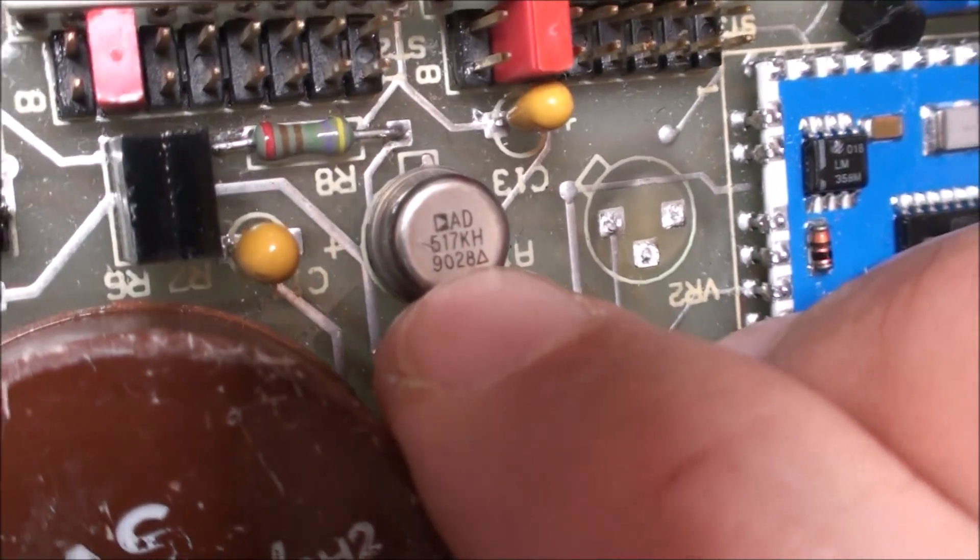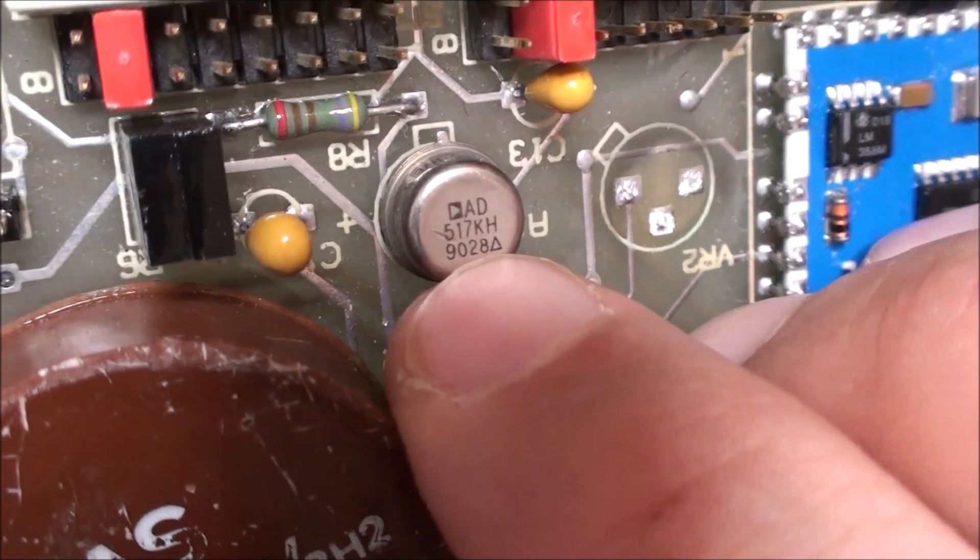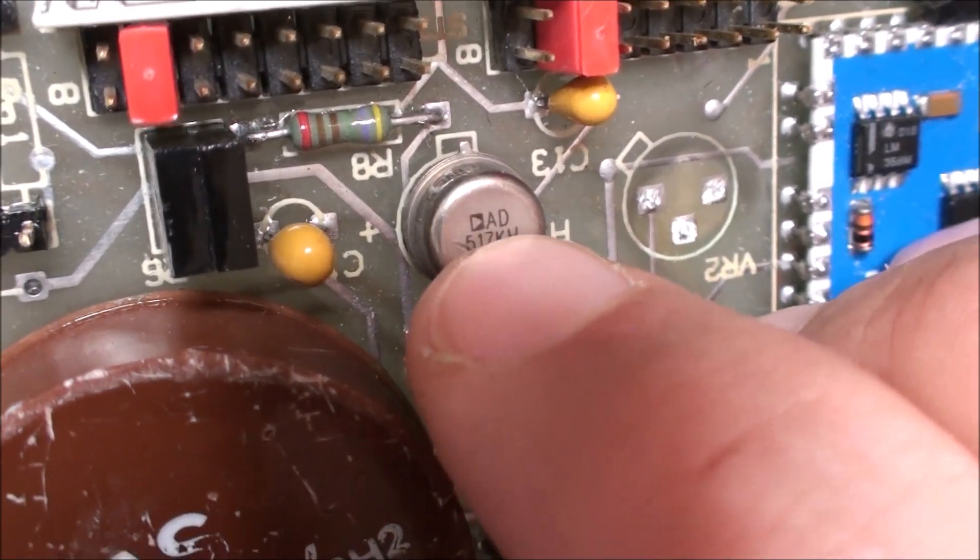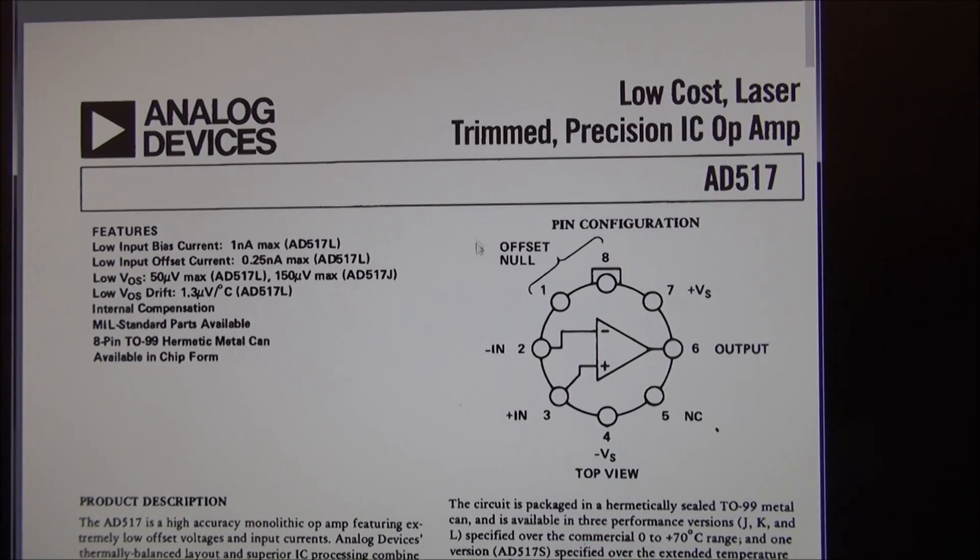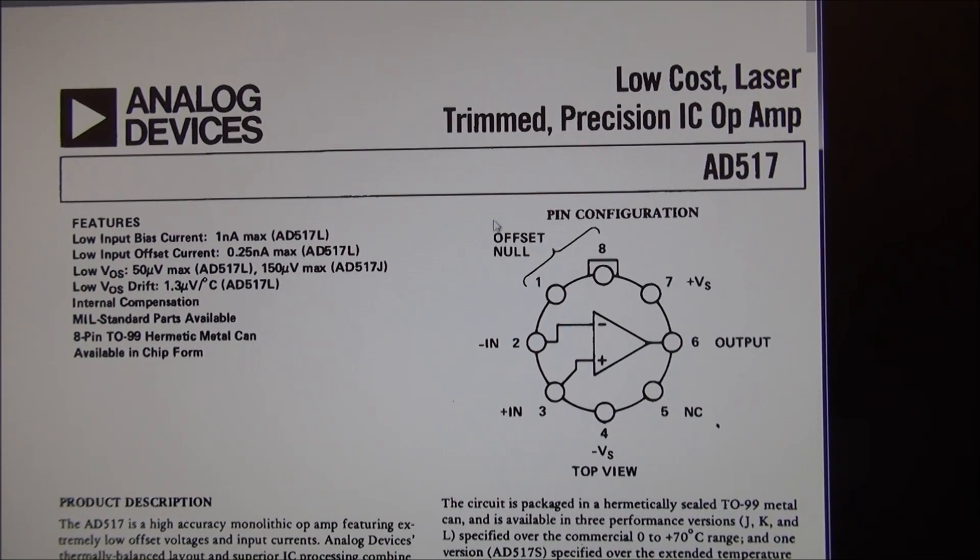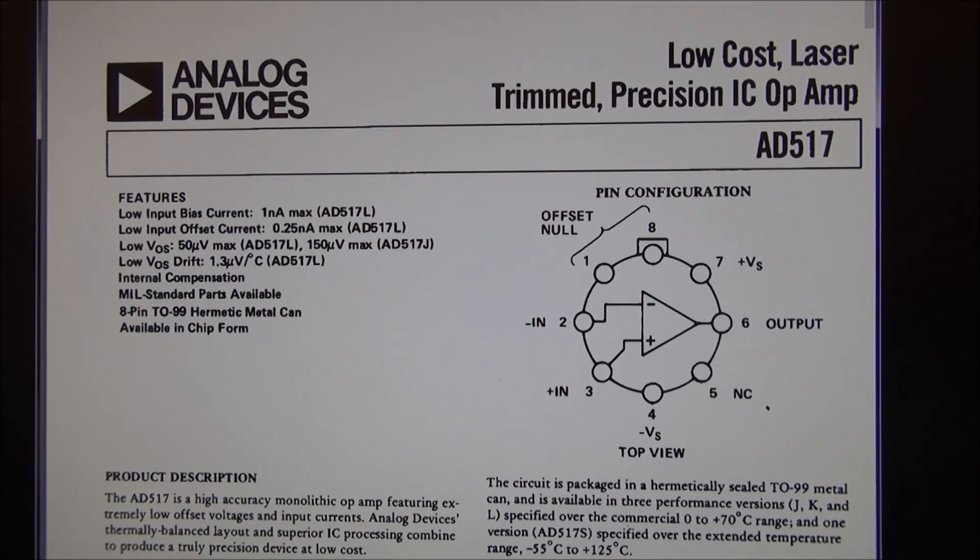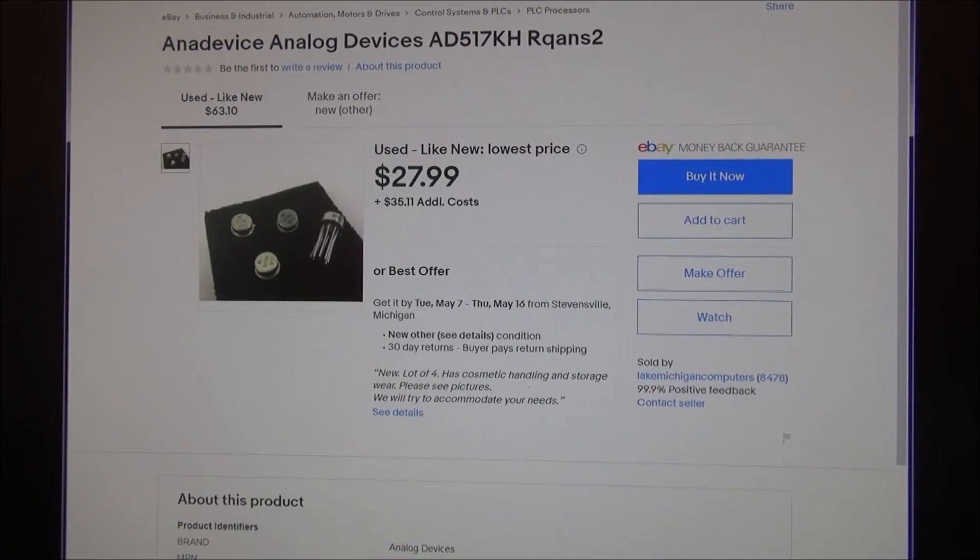The other component beside, on other cards which can change from card to card, is an AD517KH from Analog Devices, which is a high quality op-amp designed for multimeters, metrology, and high grade equipment.